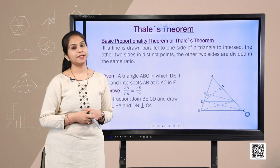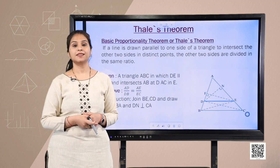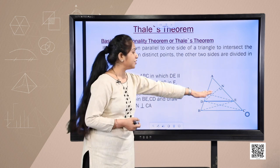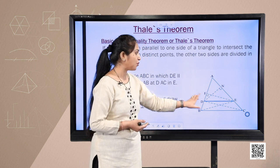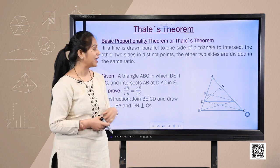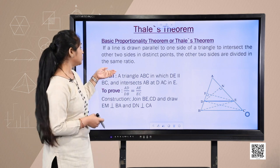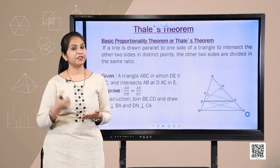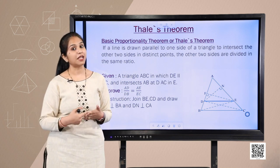Now let's understand the Basic Proportionality Theorem, also known as Thales theorem or BPT. The theorem states: if in a triangle a line is parallel to one side and intersects the other two sides at two distinct points D and E, then it divides those two sides in an equal ratio — AD/DB = AE/EC. When writing a theorem proof we note down: Given, To Prove, Construction, and then the Proof step by step.